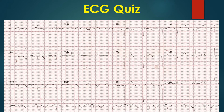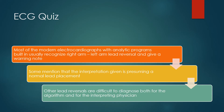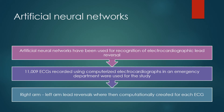Returning to the current ECG, the technical error does not explain the prolongation of the QT interval, for which usual causes will have to be sought. Most modern electrocardiographs with built-in analytic programs usually recognize right arm–left arm lead reversal and give a warning note. Some mention that their interpretation is given presuming normal lead placement. Other lead reversals are difficult to diagnose both for the algorithm and for the interpreting physician. Artificial neural networks have been used for recognition of electrocardiographic lead reversals.